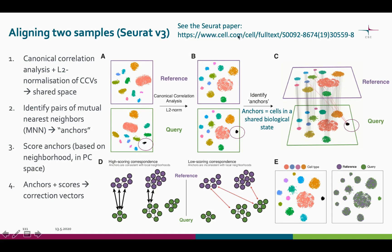Here we can see two samples that are not aligned but affected by the batch effect — the sample-to-sample variation. The process starts by performing the canonical correlation analysis. After CCA, the canonical correlation vectors are normalized. After these two steps, we have projected the dataset into a subspace which is defined by the shared correlation structures of the datasets.